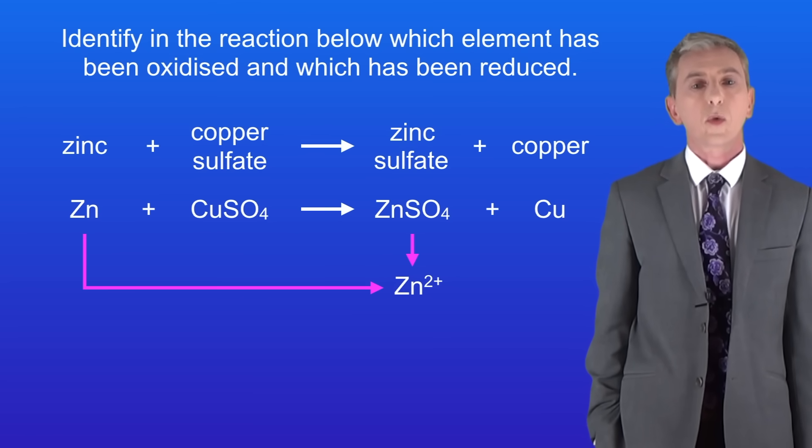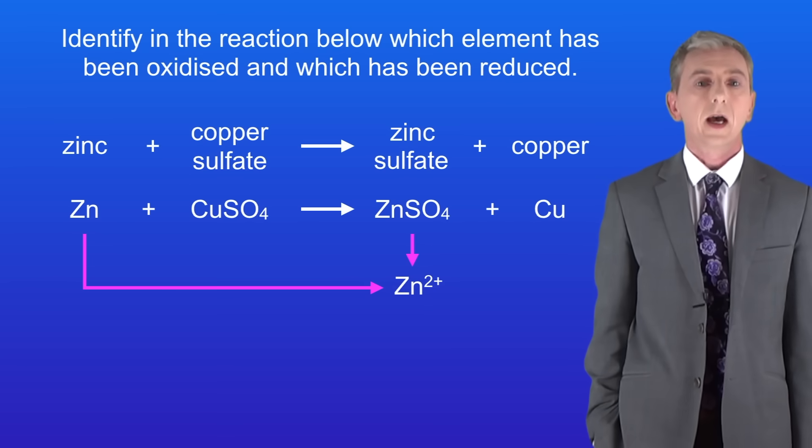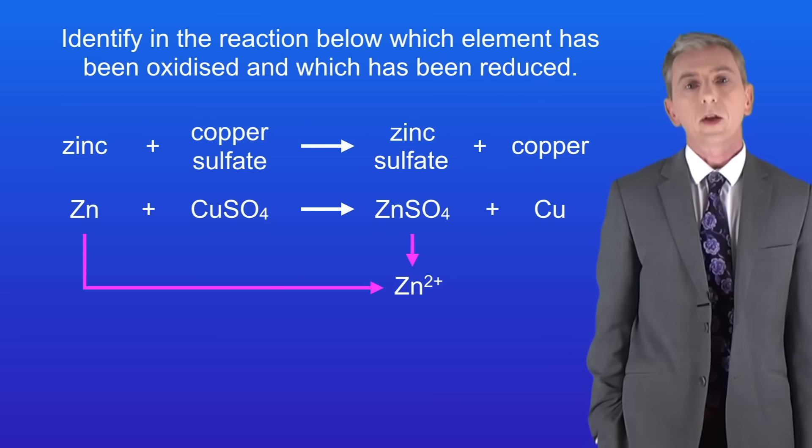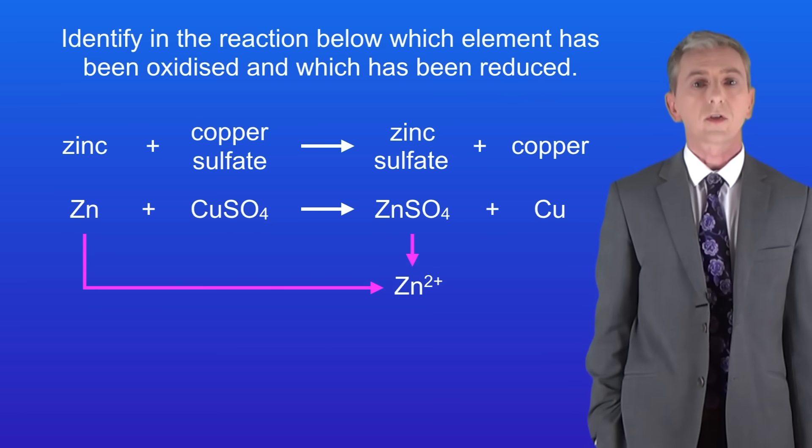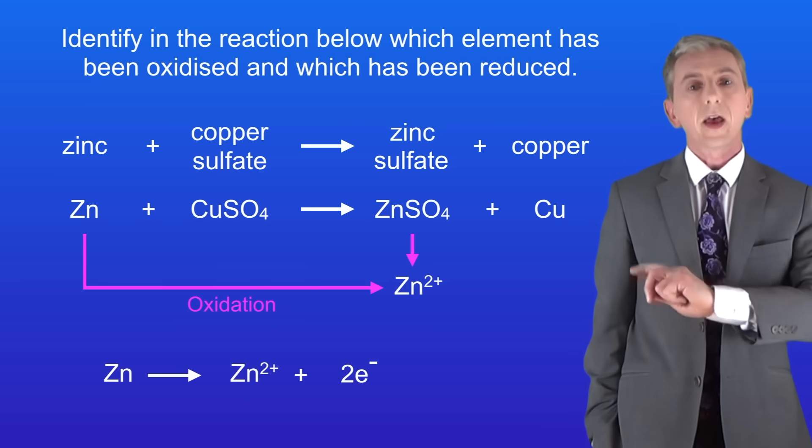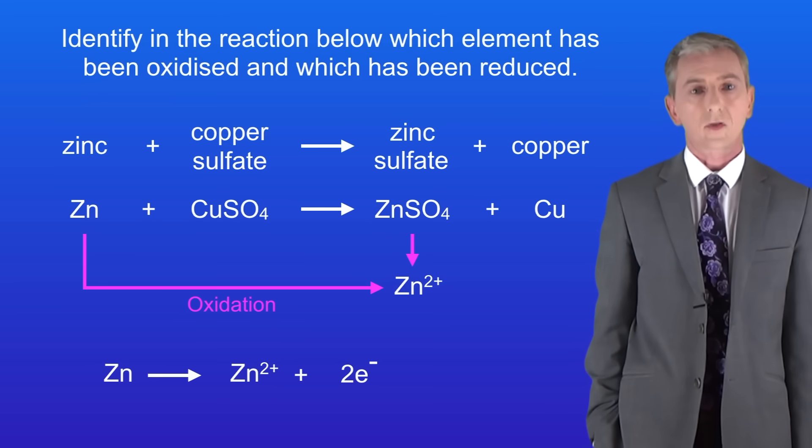If we look at the zinc, we can see that we start with the zinc atom Zn and we end up with the zinc ion Zn²⁺. In order for this to happen, the zinc atom must have lost two electrons like this. Therefore, the zinc atom has been oxidized.